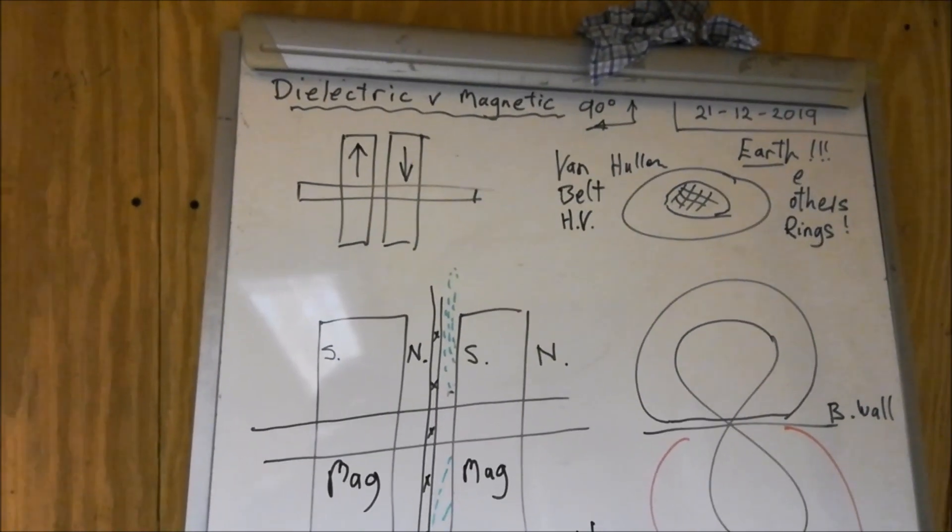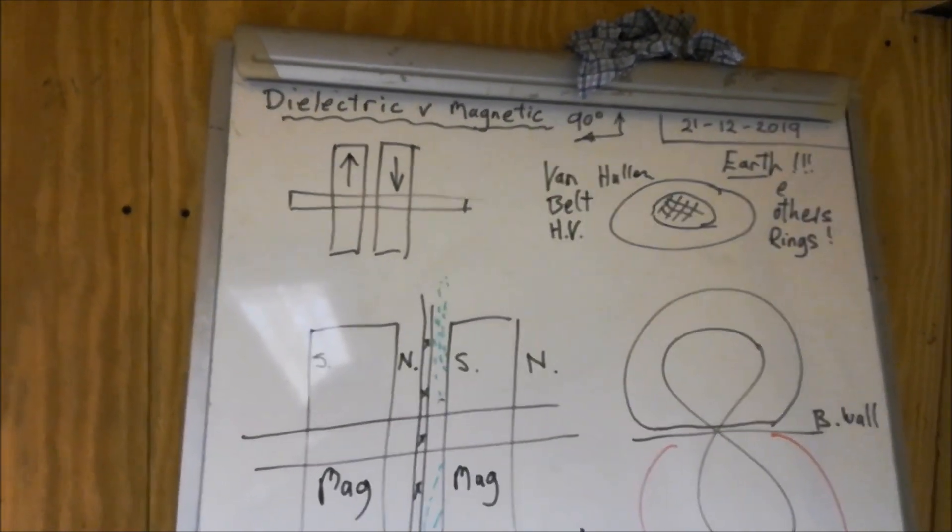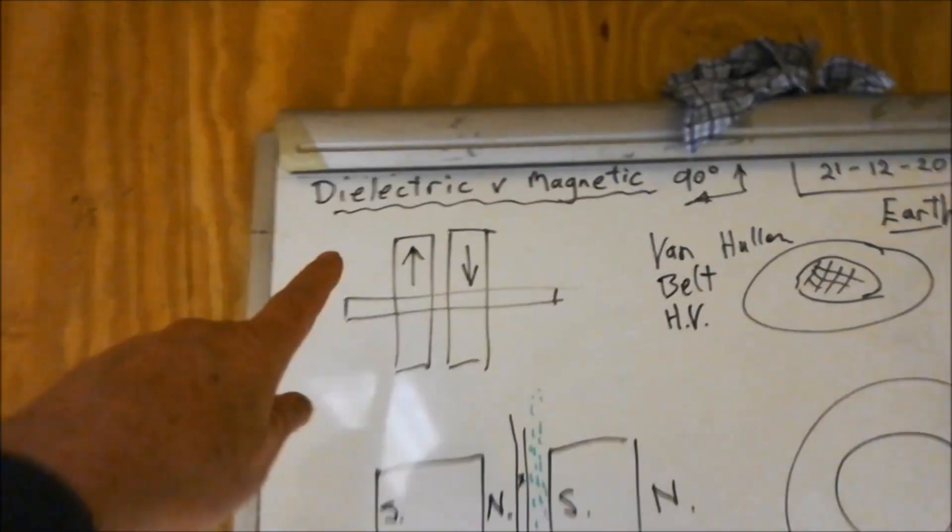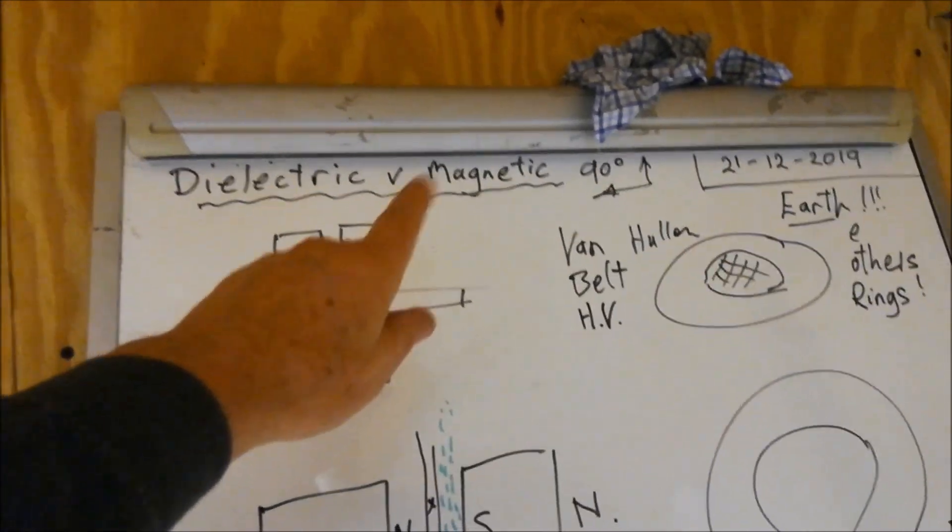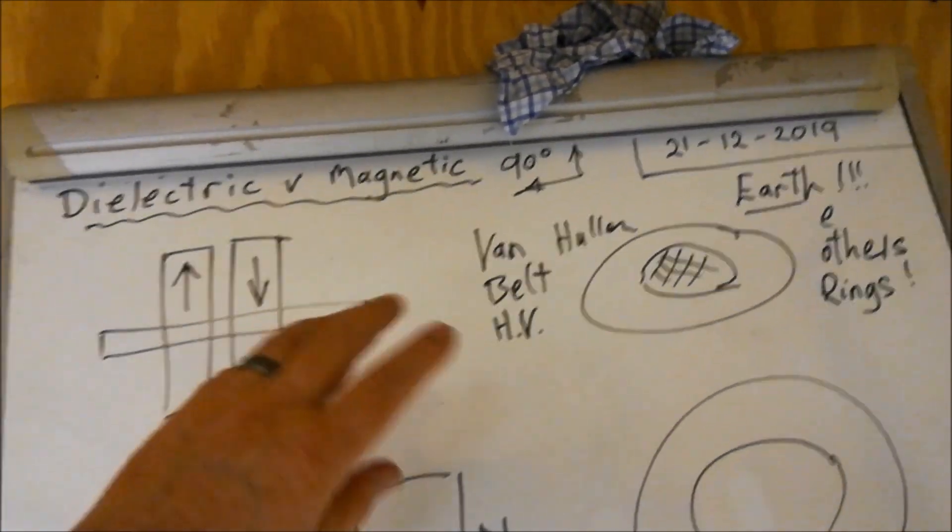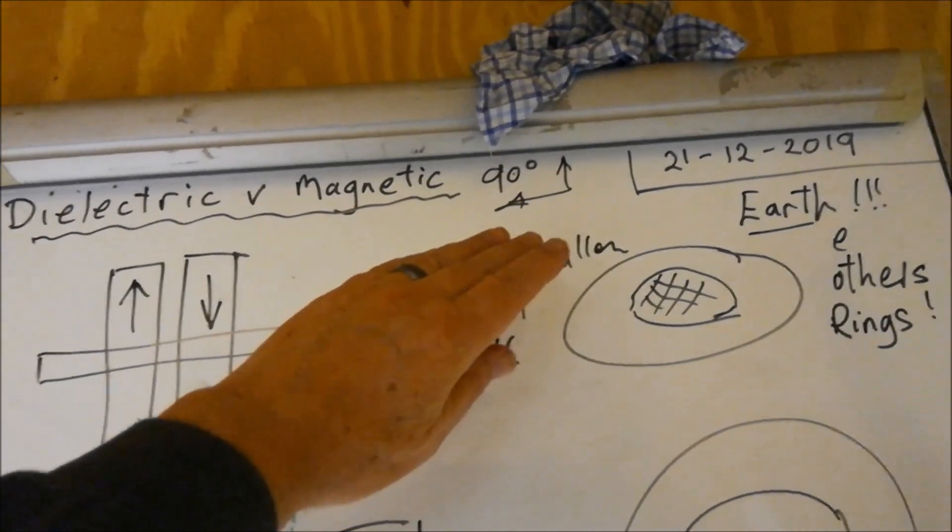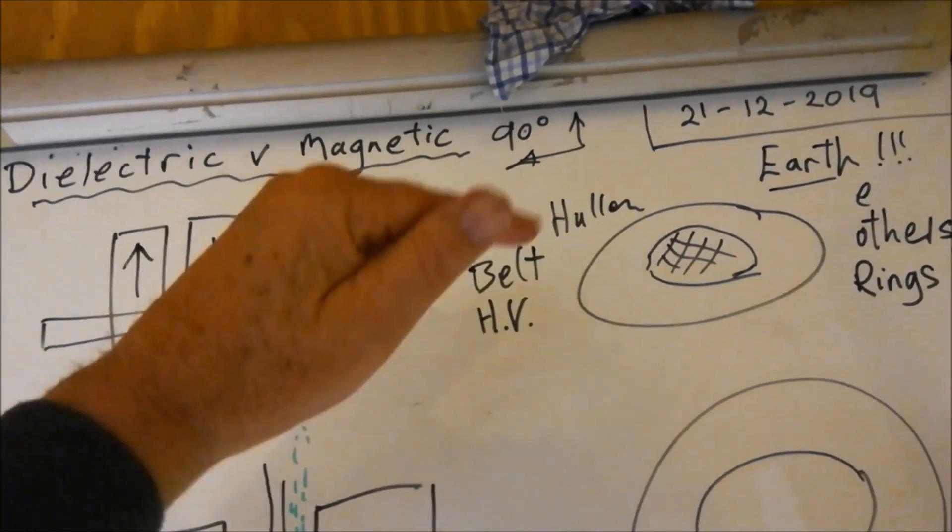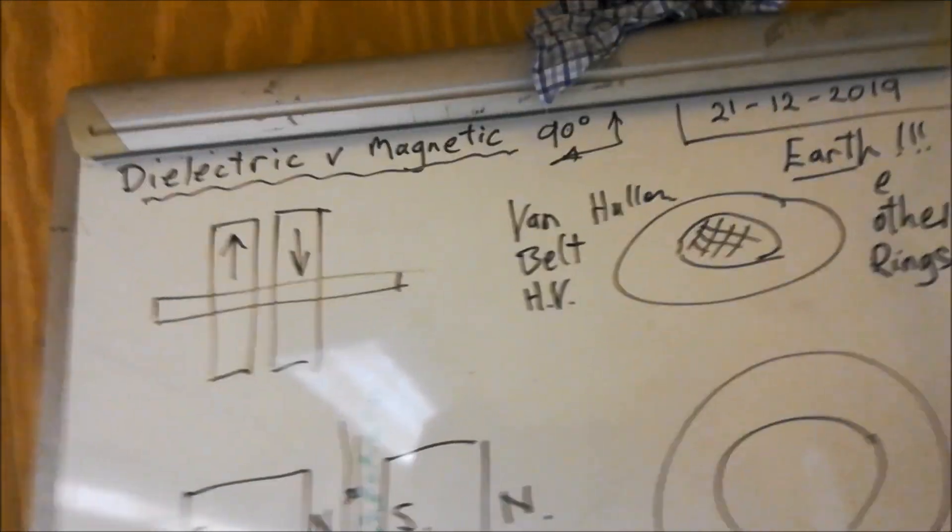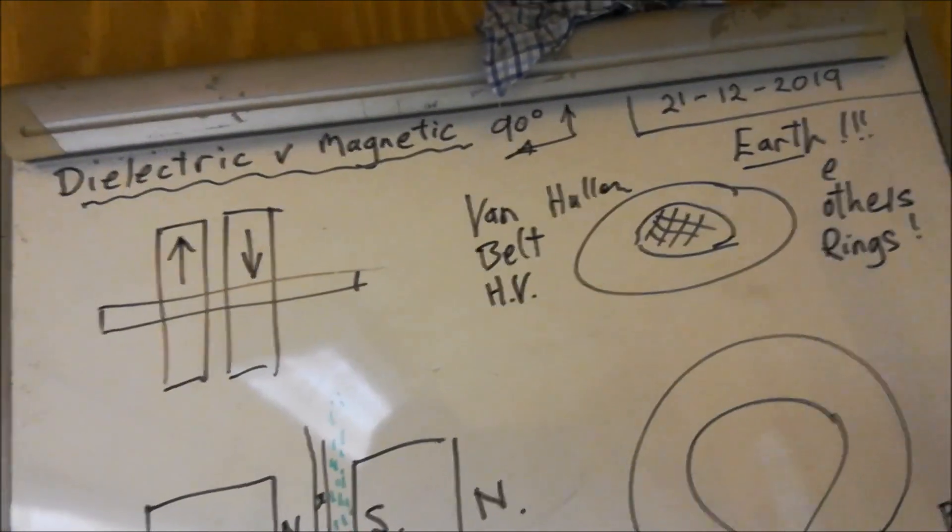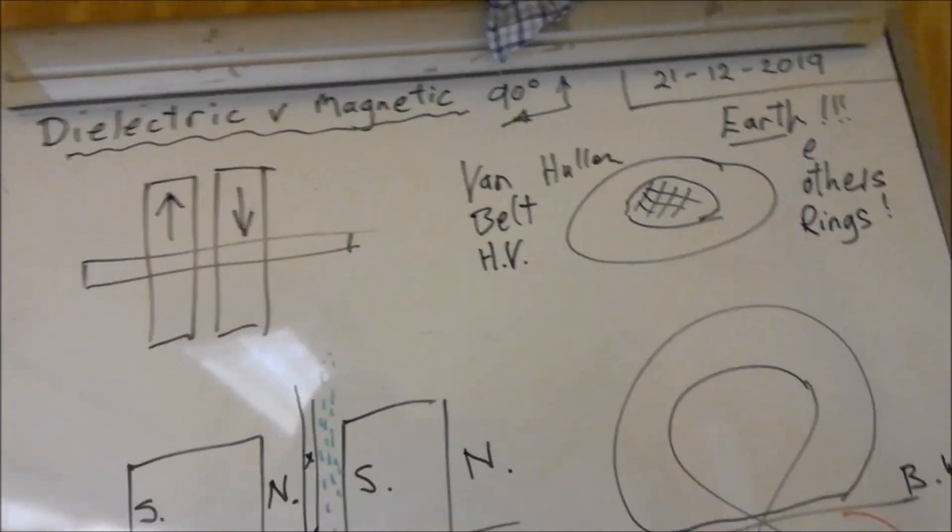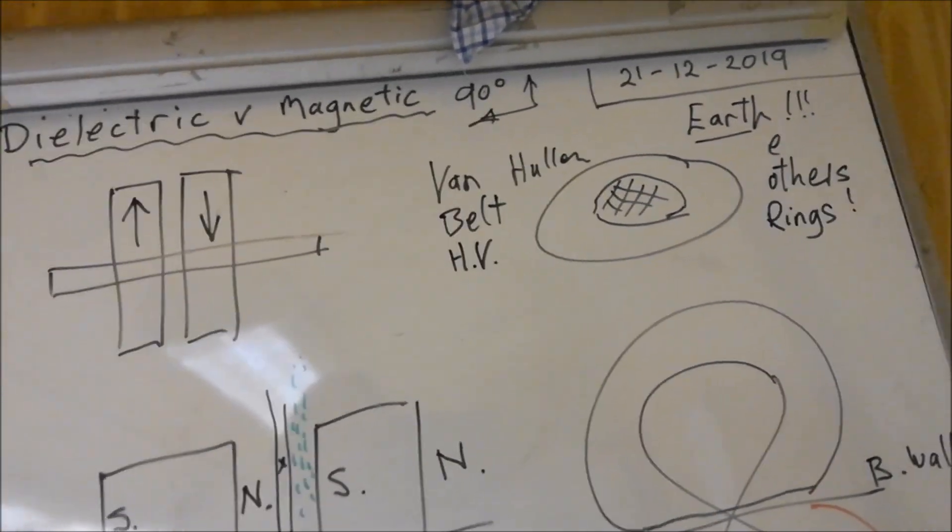It all revolves around the dielectric versus the magnetic. As some of you will know, there's 90 degrees between the two, the dielectric and the magnetic, and there's no getting away from that. My methodology and thinking now has started down a path of the Faraday paradox, and that's opening up a whole new ballgame for me.